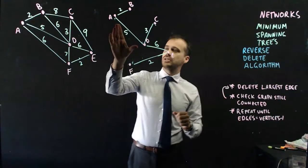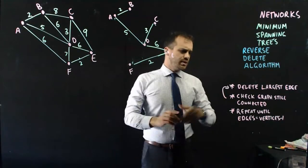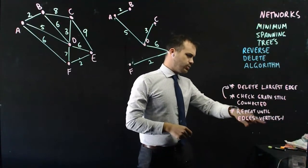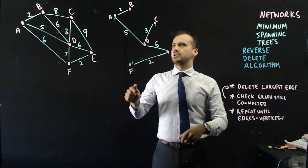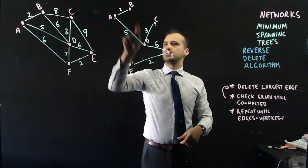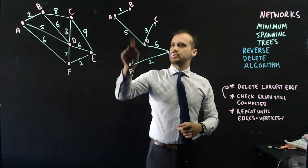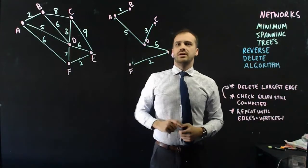Now, if I was to delete five, everything would be disconnected. Repeat until edges equal vertices minus one. Let's see. One, two, three, four, five, six vertices. One, two, three, four, five edges.